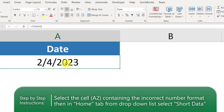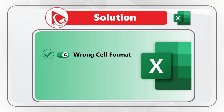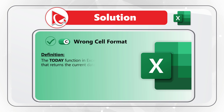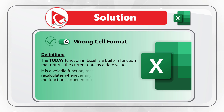Selecting Short Date formats it to today's date, which is February 4th, 2023. To understand the issue, we need to understand the TODAY function in Excel. The TODAY function is a built-in function that returns the current date as a date value.